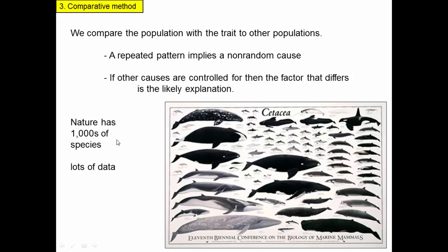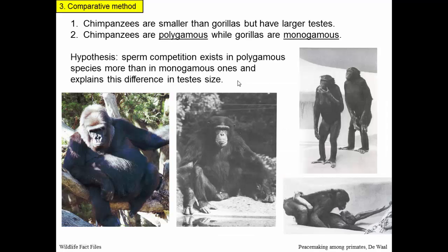The good news is that nature has thousands of different species. Here's just a poster of all the different species of whales. So when we look at nature, we have lots of data from different species or populations to do studies like this. For example, chimpanzees are smaller than gorillas, but when you look at their testes, they actually have much larger testes. Despite the fact that their body is smaller than a gorilla, their testes are much larger than gorillas. That's one piece of information.